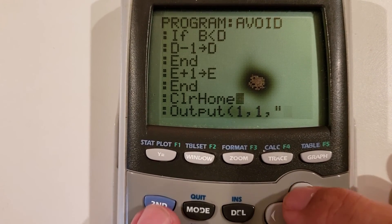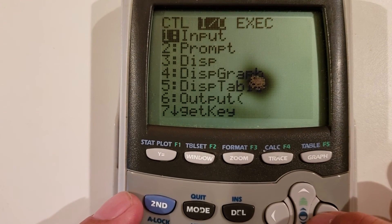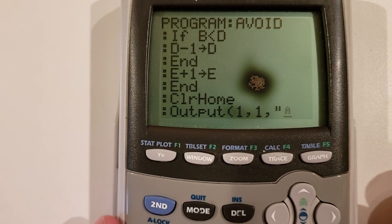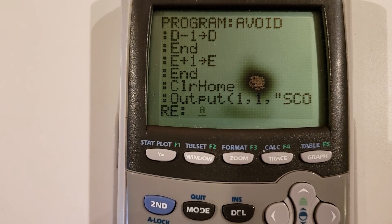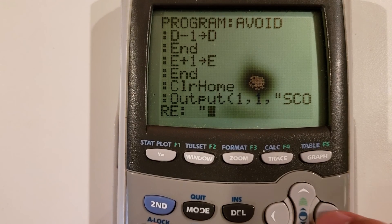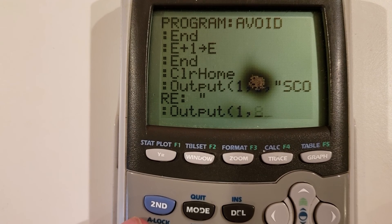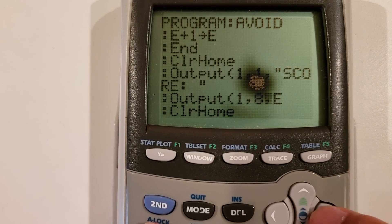Before we do all this clear home stuff, I'm going to do another clear home. We'll do an output, and we'll put 1,1, and we'll say the player got a score, and I'll add an empty space. Then we will output, I can count the characters. One, two, three, four, five, six, seven. So if I add another output at 1,8, and E. Note that the E does not have any quotation marks, meaning this is the value stored in E.